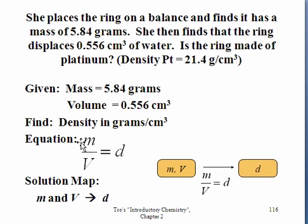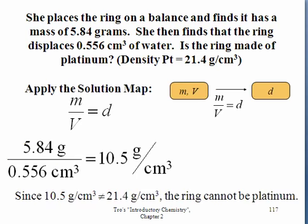So to figure this out, you use the equation mass divided by volume is density. If you have mass and volume, you can get to density through this equation. So our mass was 5.84 grams. Our volume was 0.556 centimeters cubed. And the answer is 10.5 grams per centimeter cubed, expressed in correct sig figs. This has 3, this has 3, your answer should have 3. So this clearly is not platinum. And so I guess the marriage is not going to happen.